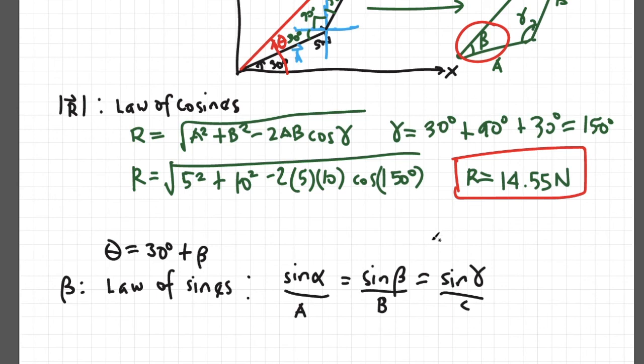But since our target variable is beta, and we already calculated gamma, the value of gamma is 150, remember?